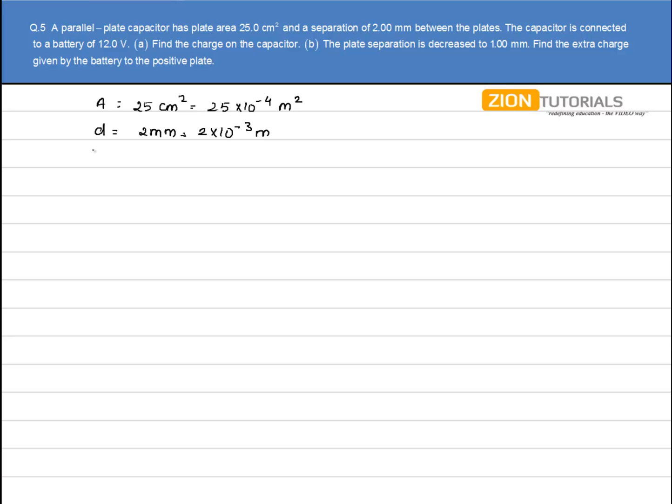The capacitor is connected to a battery of 12V. In the first case, we have to calculate the charge on the capacitor. The formula we'll use is Q = CV.